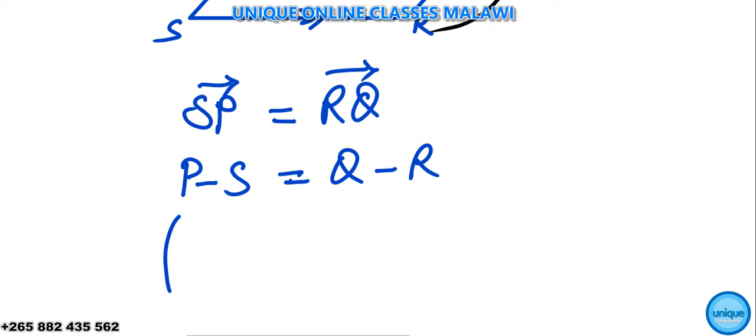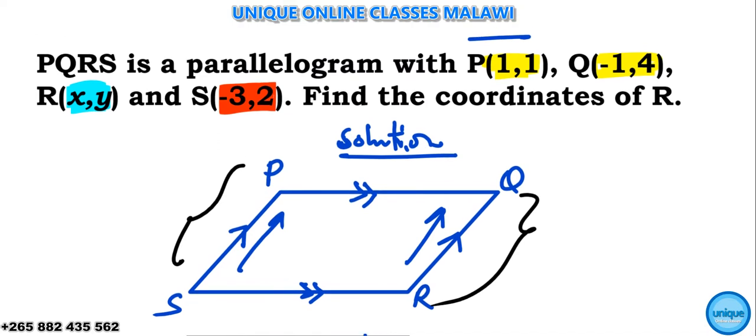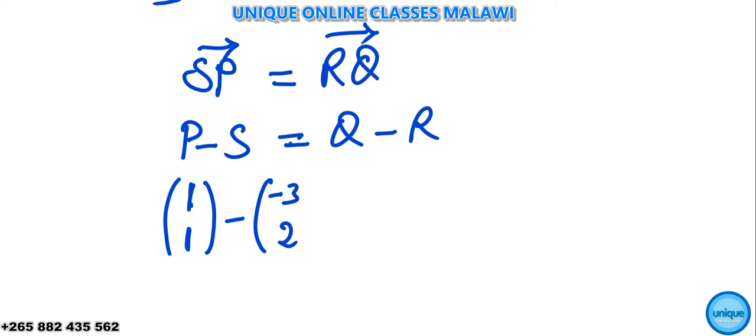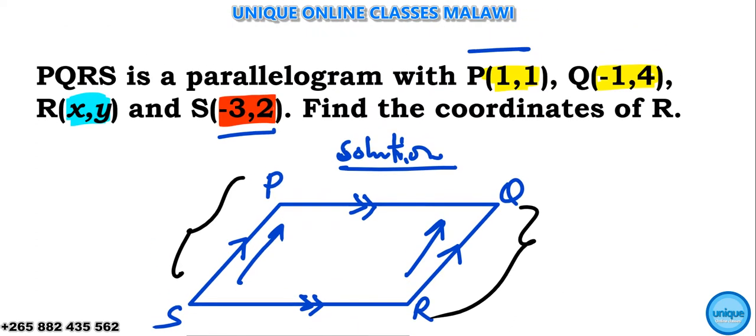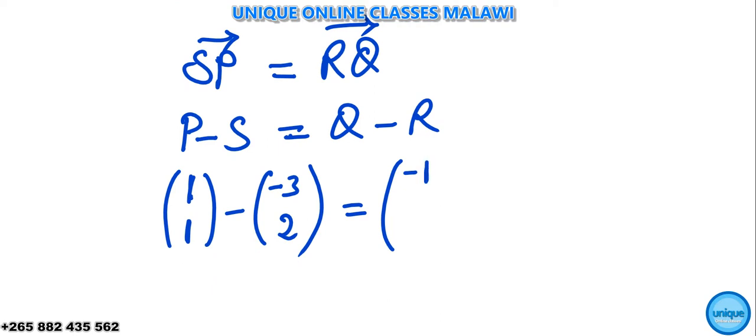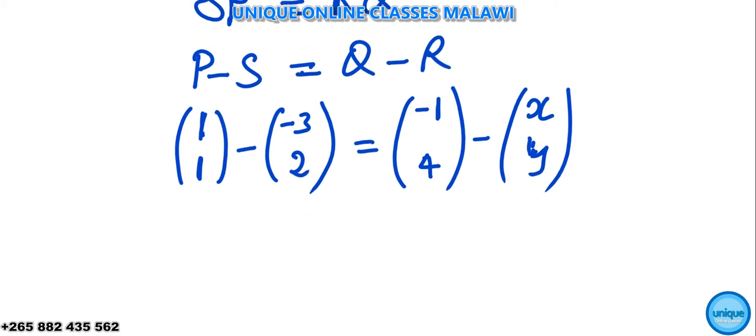So we have 1 down 1, then minus S, S is negative 3 then 2, then it's equal to Q, Q is negative 1 comma 4, so I'm writing here negative 1 comma 4. And finally R is X, Y, something like that.